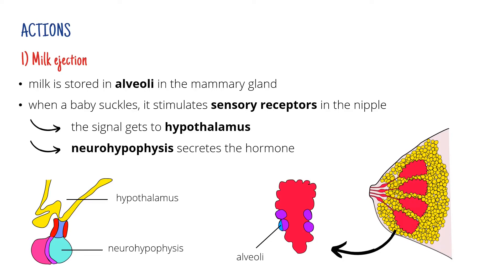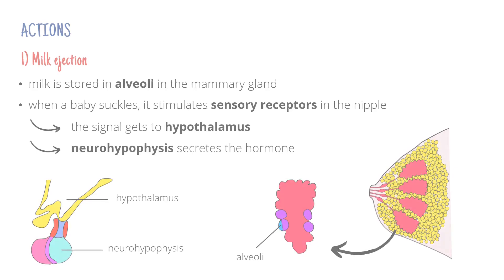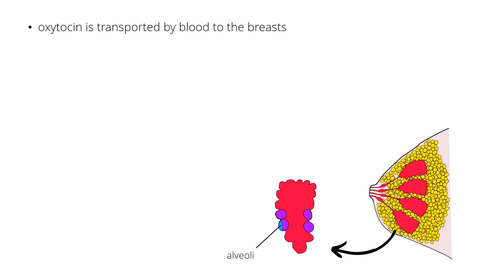Remember that oxytocin, together with antidiuretic hormone, actually gets produced in neurons in the hypothalamus. They are stored in axons of these neurons, but these axons are located in the neurohypophysis. When the hypothalamic neurons are stimulated, hormones are released from the axons into the neurohypophysis. Then oxytocin is transported by blood to the breasts.